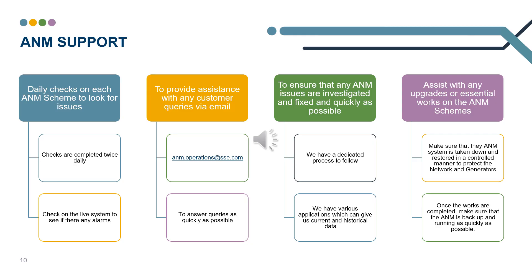Twice a day, checks are completed on all A&M schemes. We are looking for alarms, curtailment, or any generators being out of service. We have a live system which gives us an overview of the A&M, but I can also check our network around all generators. It may be that there is a fault or planned works, and I can see up to date information here. I also have access to information from outage planning so I can see if there are any planned works that day.